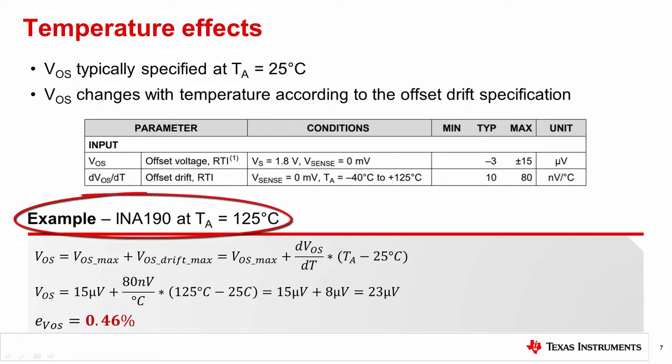Let's calculate the total VOS of the INA190 C at an ambient temperature of 125 degrees C using the equations shown here. We first add the room temperature VOS, as before, but now add an extra term, which multiplies the drift value by the change in temperature relative to 25 degrees C. Plugging in our 100 degrees C difference, and 80 nanovolt per degree C drift, we get an additional offset of 8 microvolts, and a total VOS of 23 microvolts.